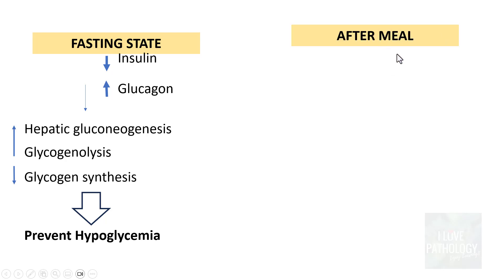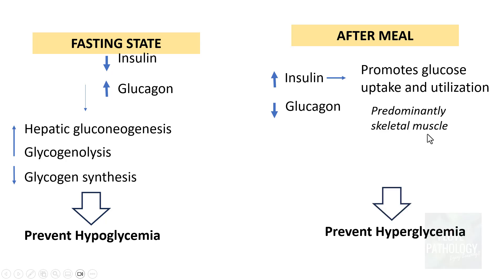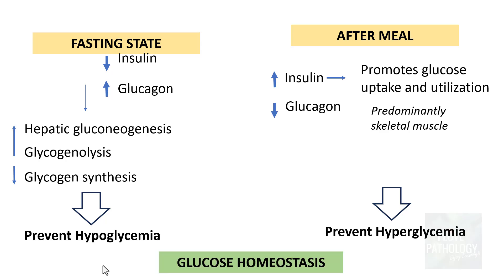Whereas after a meal, insulin levels increase and glucagon levels decrease. Increased insulin is important because it promotes glucose uptake and its utilization, predominantly in the skeletal muscle — whatever glucose you take in is taken up and utilized. This prevents hyperglycemia. So during fasting we have mechanisms to prevent hypoglycemia, whereas after a meal we have mechanisms to prevent hyperglycemia. This is the concept of glucose homeostasis.